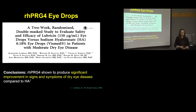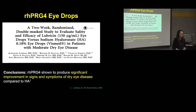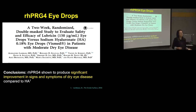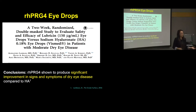Indeed, we have been doing that. There's been a recent two-week clinical trial comparing RH-PRG4 eye drops against hyaluronic acid (HA) eye drops in patients with dry eye disease. We found that PRG4 was able to significantly improve signs and symptoms of dry eye disease compared to HA. This is really promising and shows potential for clinical use of RH-PRG4.